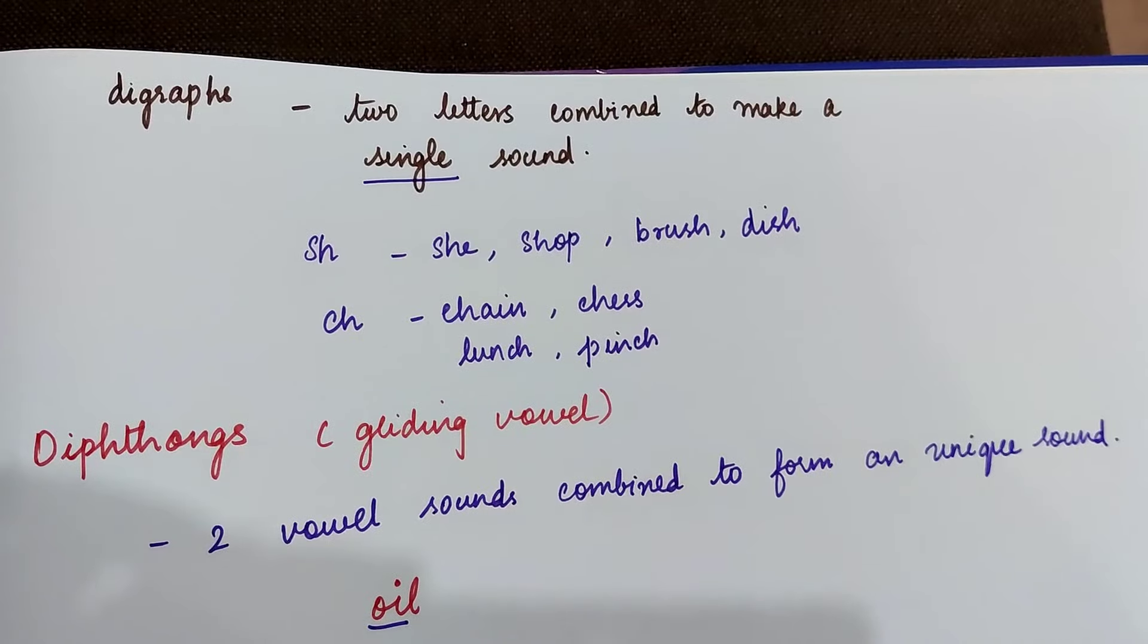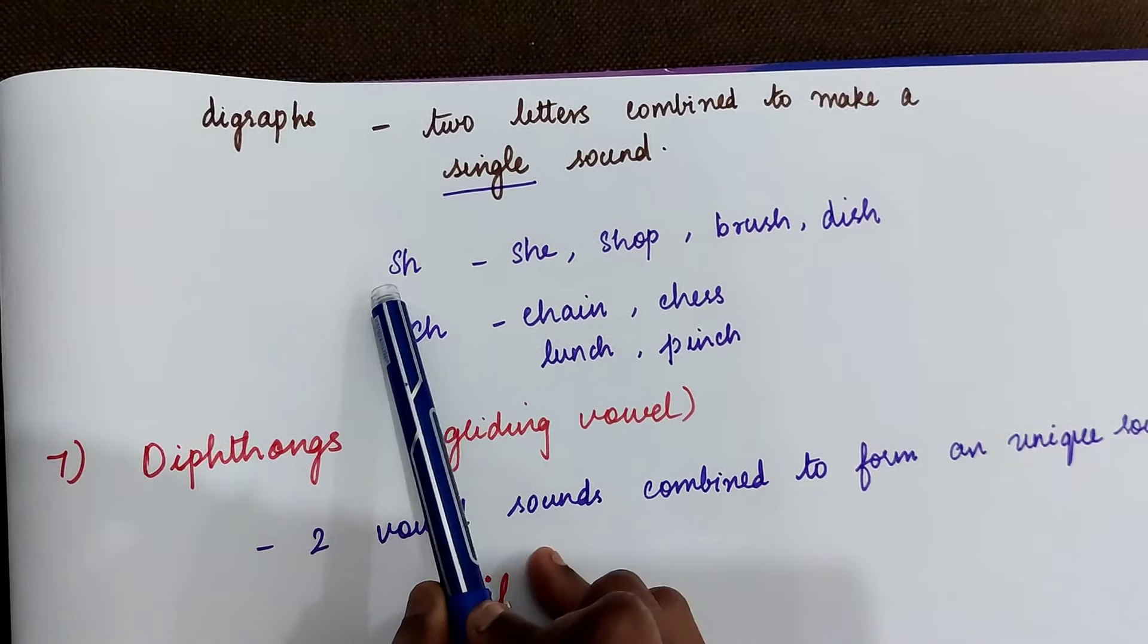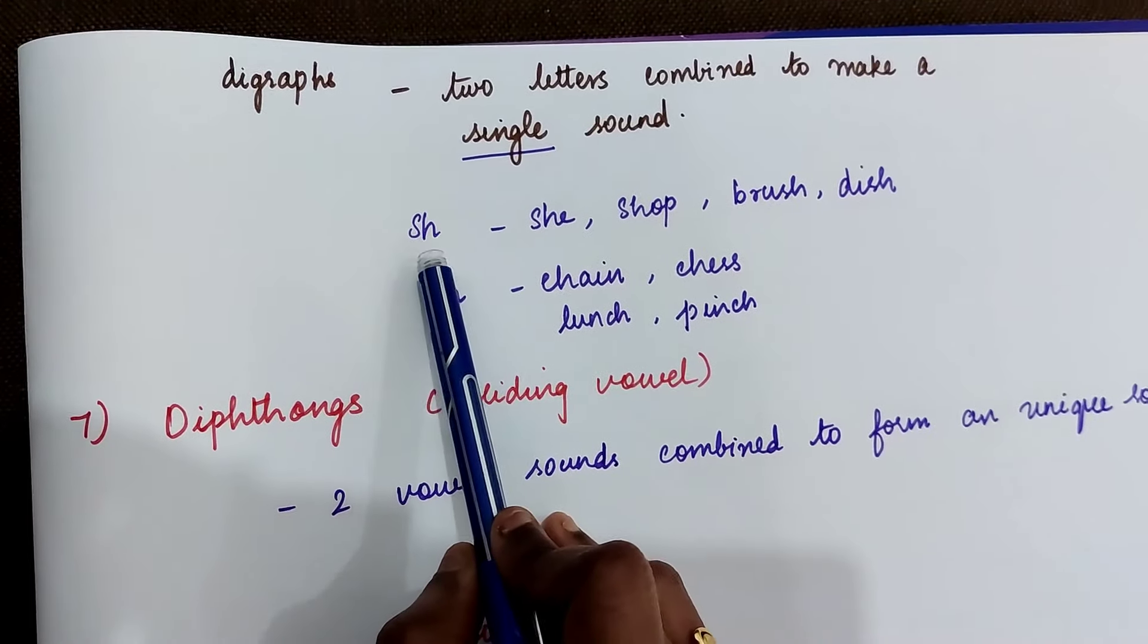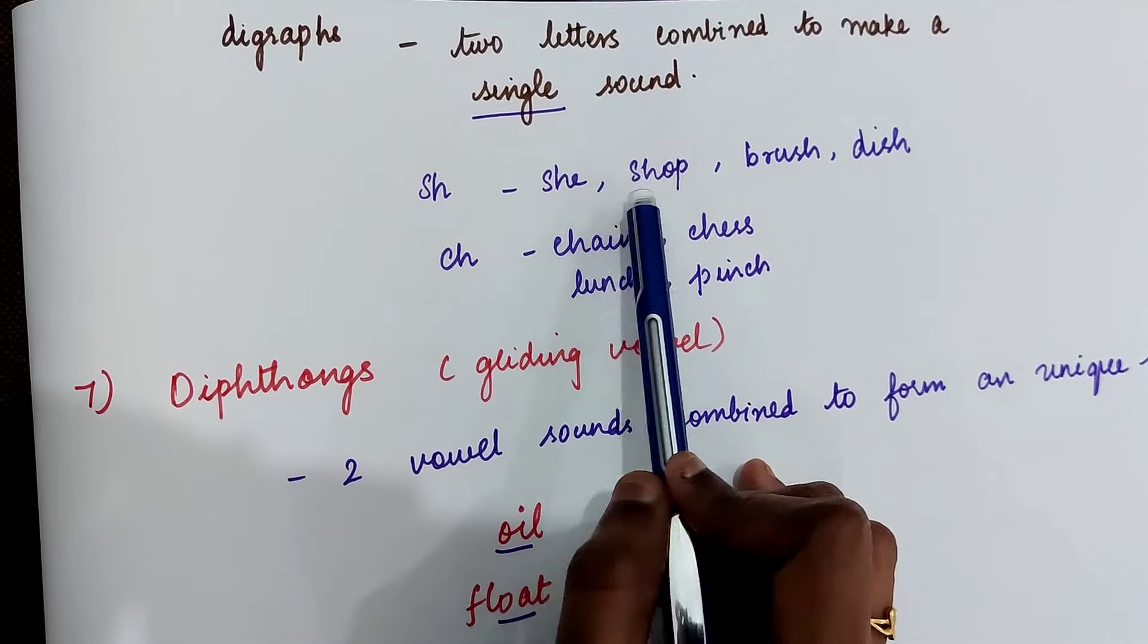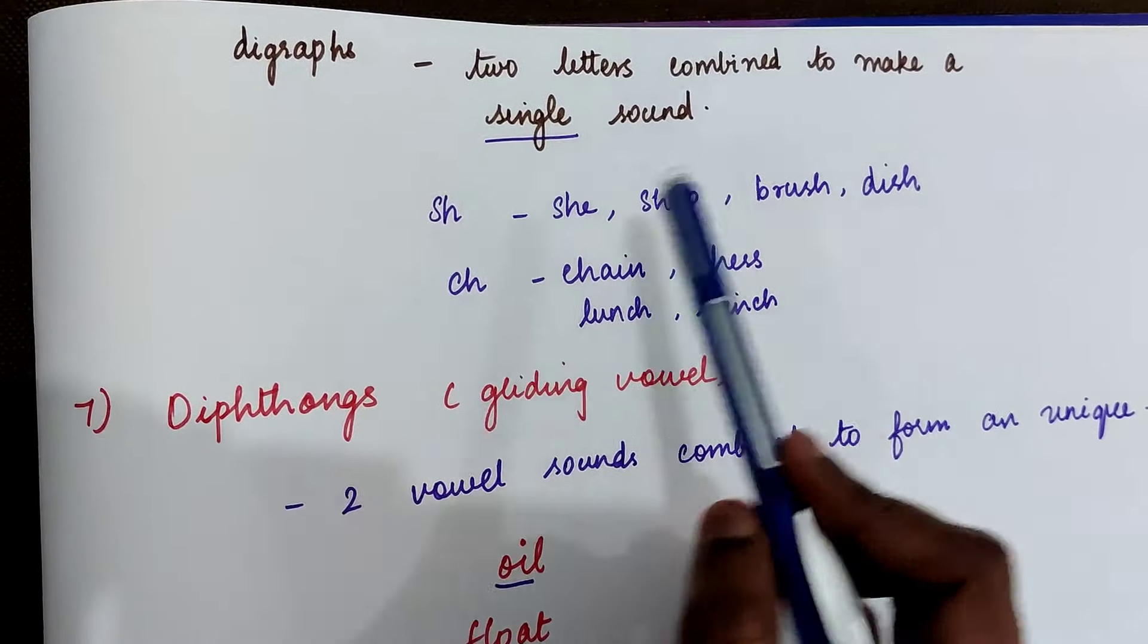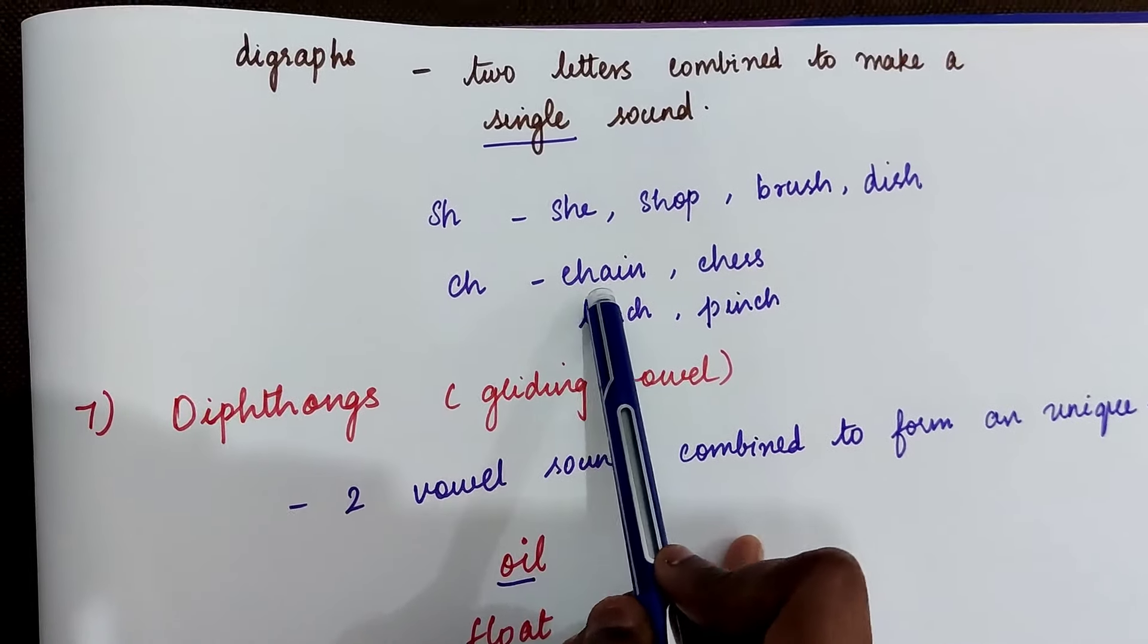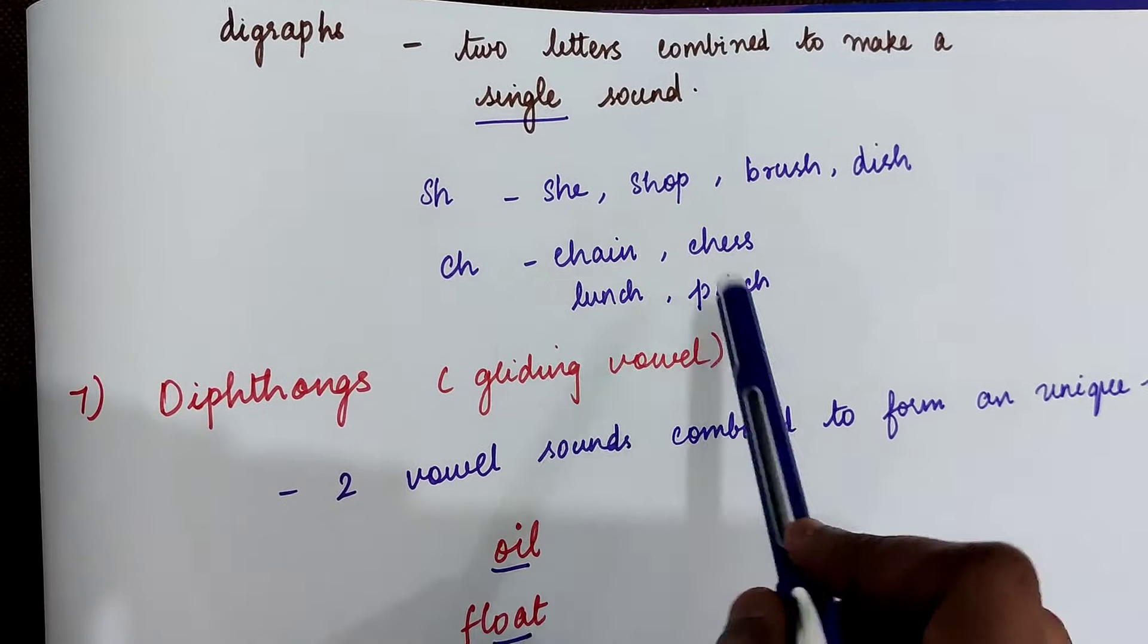Digraphs. Two letters combine to make a single sound. Example, sh. Here s and h combine to form a digraph with sound sh. She, shop. Here it comes in the beginning. Brush and dish it comes at the end. This is another digraph, ch. Chain, chess in the beginning. Lunch, punch at the end.